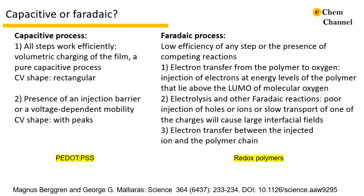Now let's get back to the question: how to tell if it is a capacitive or faradaic process? For a capacitive process, all five elementary steps should work efficiently — meaning it is a volumetric charging and pure capacitive process. In this case, the CV curve should be rectangular. If there is a barrier for the injection process, the CV curve will show peaks, but the process is still dominated by the capacitive mechanism.